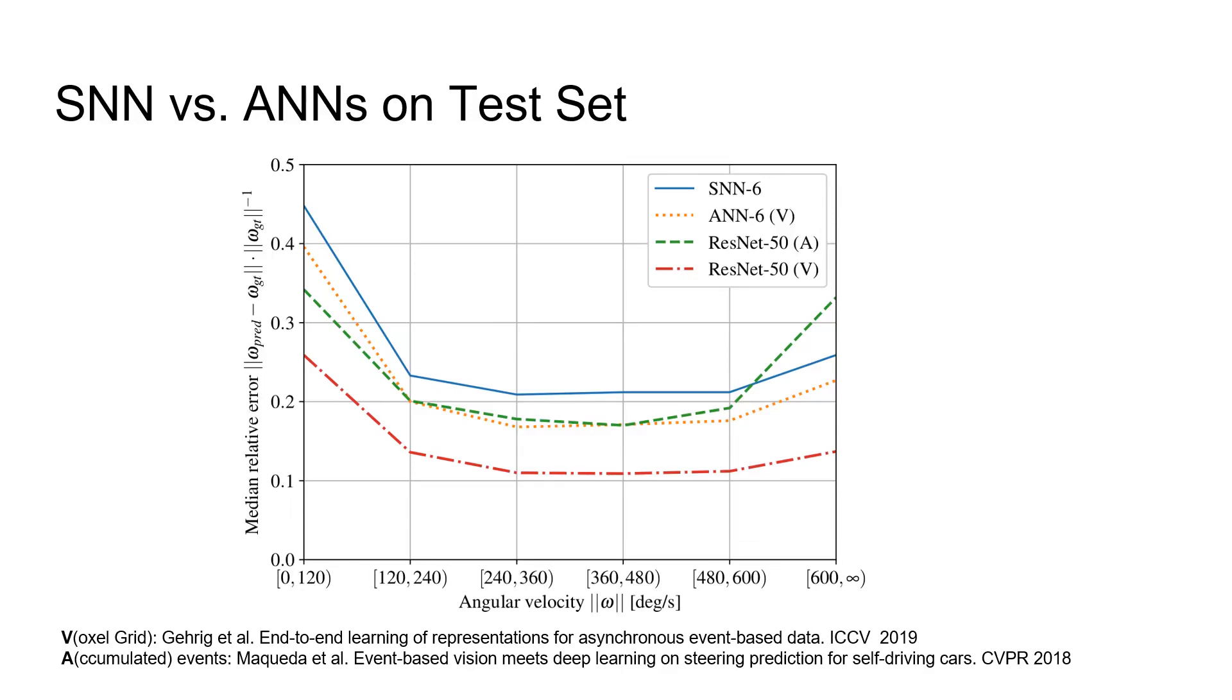To assess the importance of deeper networks, we also train a 50-layer ResNet ANN from scratch. Its performance is visualized in red. Indeed, it significantly outperforms all other methods and indicates that deeper networks still improve results. Due to computational constraints, the same experiments could not be performed with the SNN.